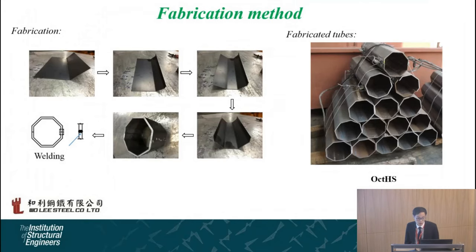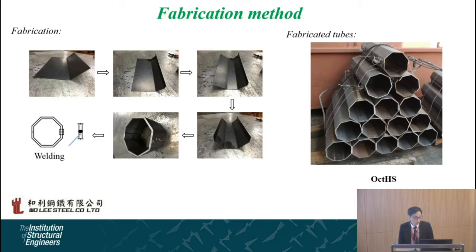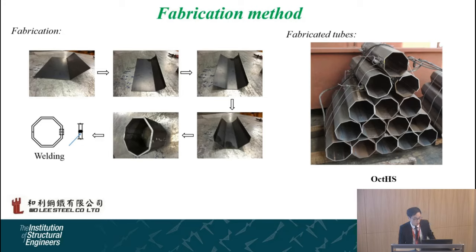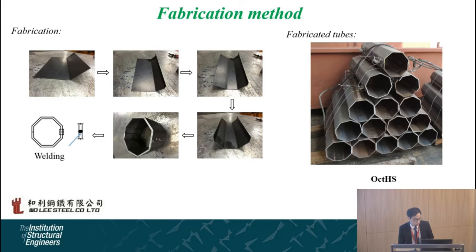Let's start with the hollow steel tubular stub columns. First, I will introduce how we fabricate this octagonal-shaped hollow steel tube. We use the cold-forming method — the press-braking method — to form half of the section and then weld them together. The figure on the right shows some fabricated octagonal hollow steel tubes.